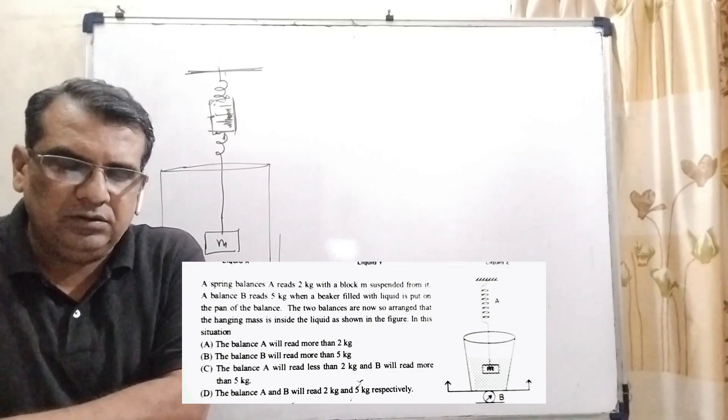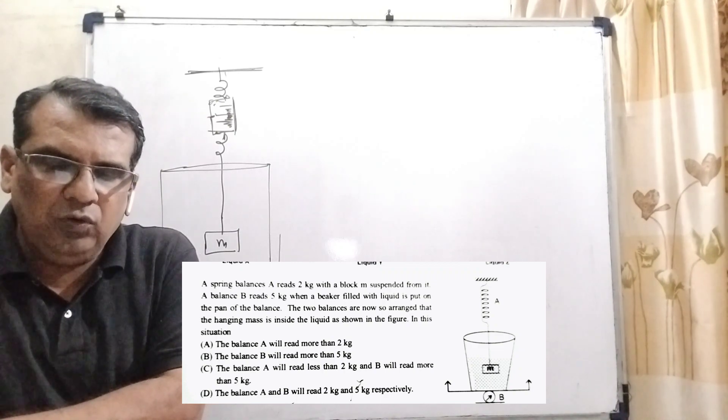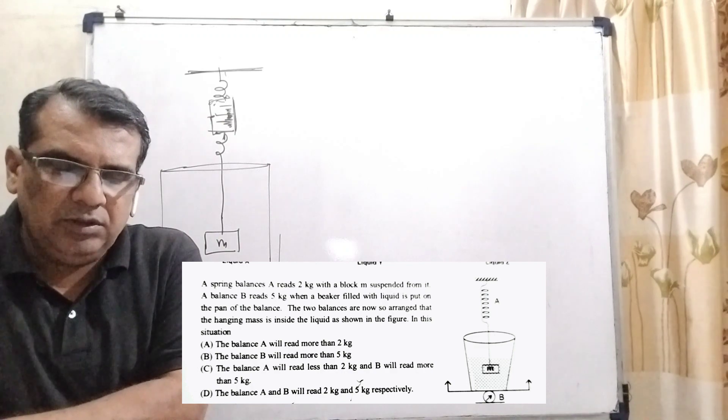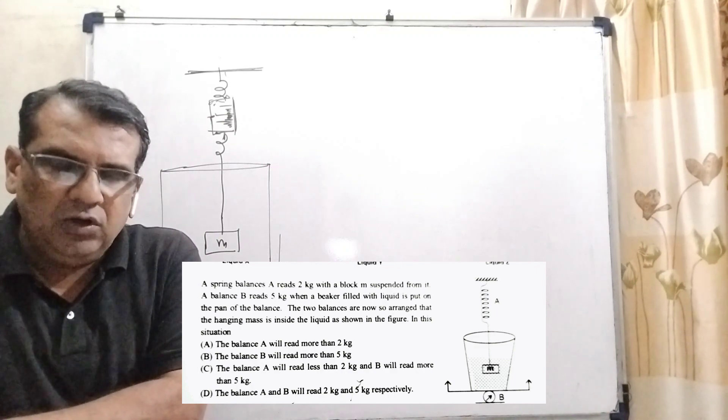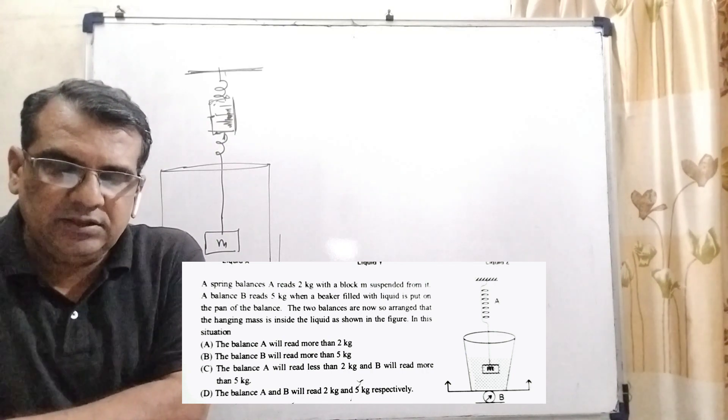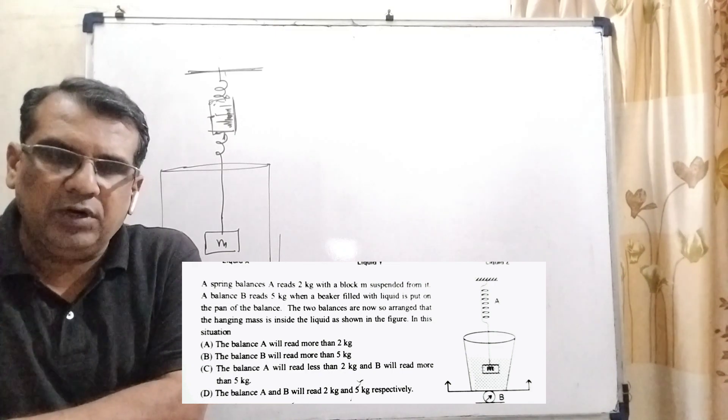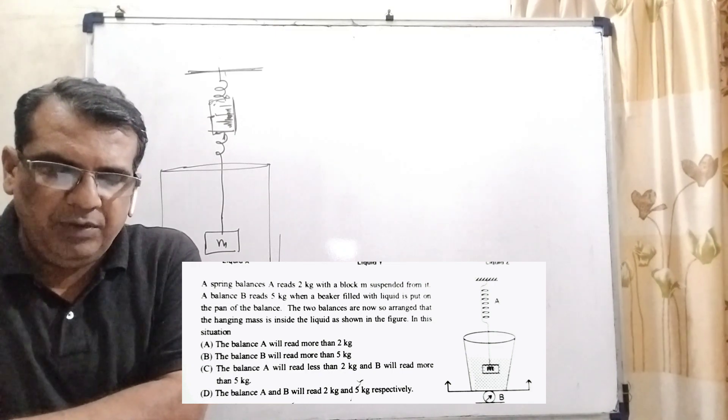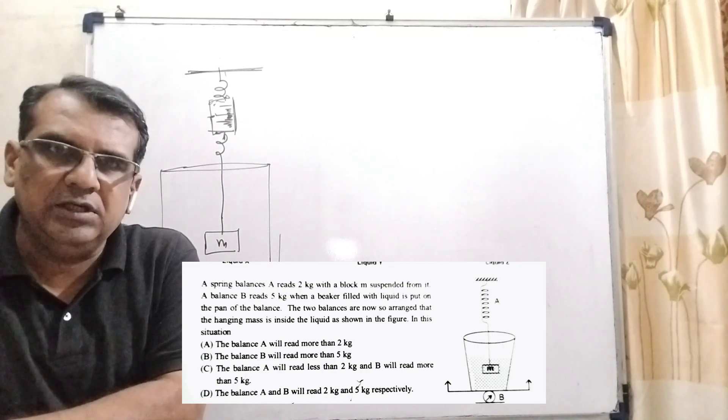In this situation, option A, the balance A will read more than 2 kg. The balance B reads more than 5 kg. Option C, the balance A will read less than 2 kg and B will read more than 5 kg. And option D, the balance A and B will read 2 kg and 5 kg respectively.